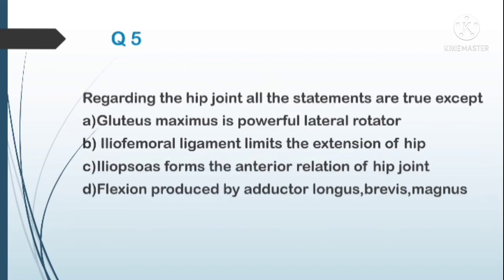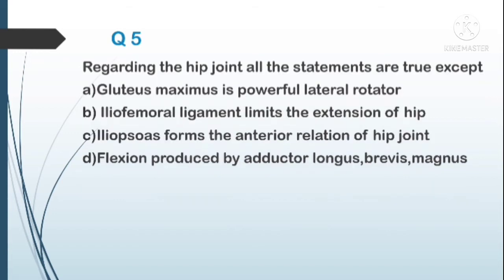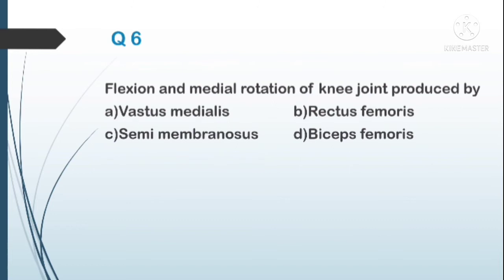Question number five: regarding the hip joint, all statements are true except — A) gluteus maximus is a powerful lateral rotator, B) iliofemoral ligament limits the extension of the hip, C) iliopsoas forms the anterior relation of the hip joint, D) flexion is produced by adductor longus, brevis, and magnus. The answer is D. Flexion being produced by adductor longus, brevis, and magnus is wrong because the adductors produce adduction of the hip joint.